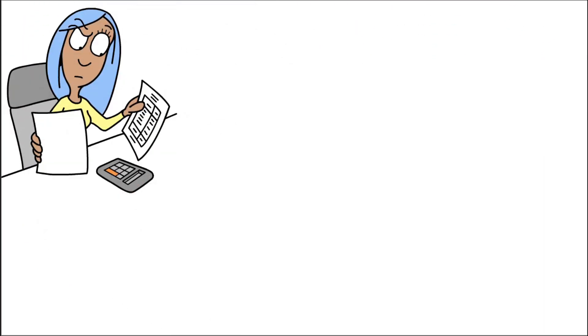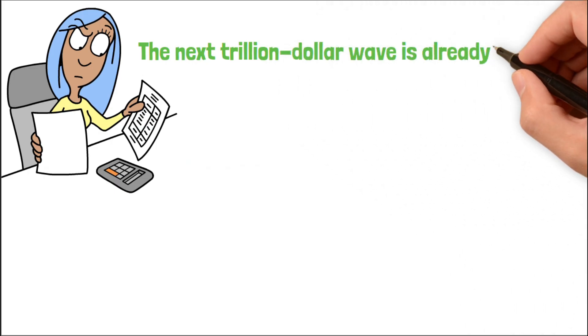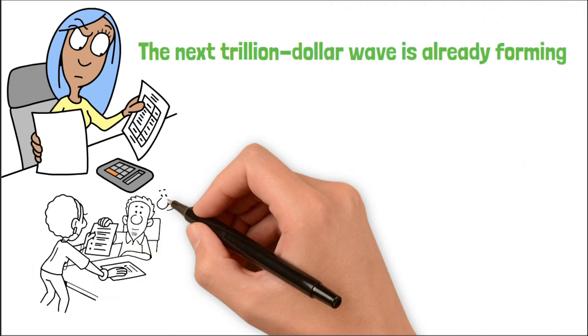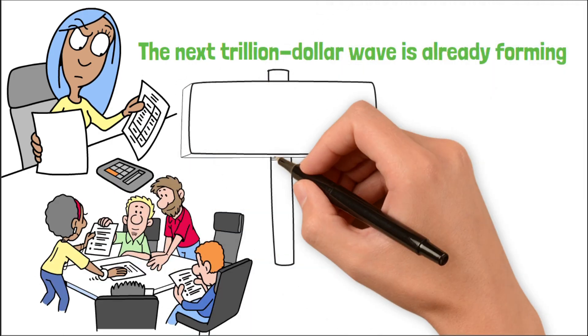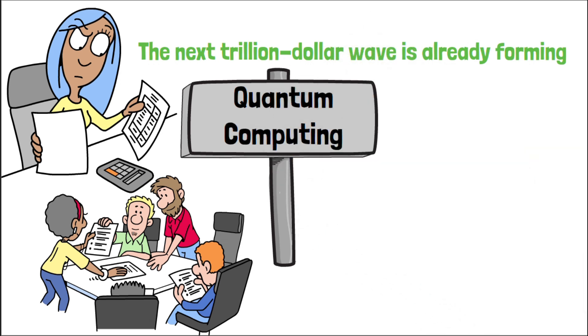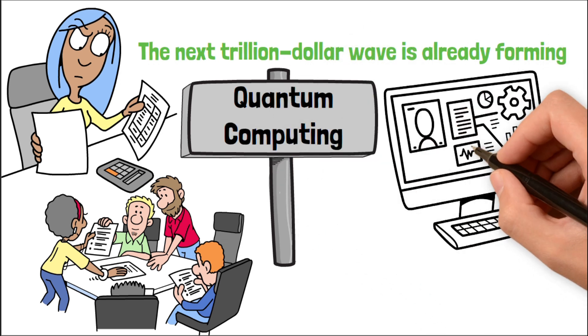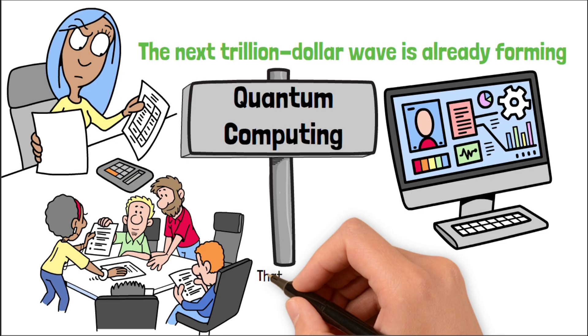Now here's the part that most people don't see coming. The next trillion-dollar wave is already forming. And unlike AI, it's not crowded yet. It's called quantum computing. And according to Rigetti's CEO, the world is just four years away from quantum advantage.